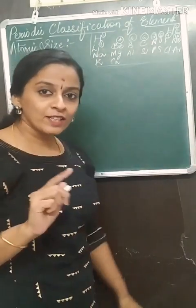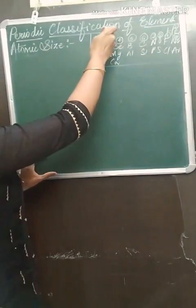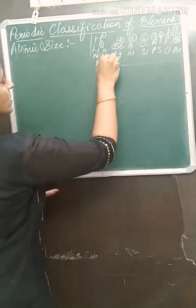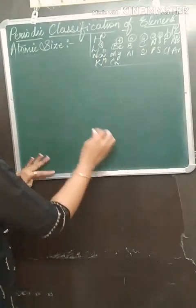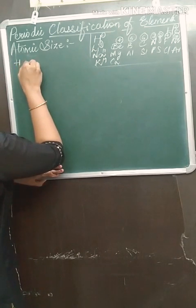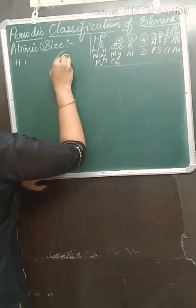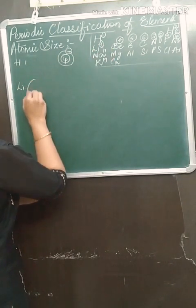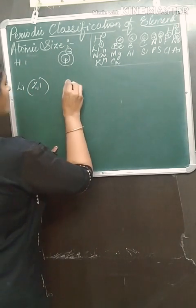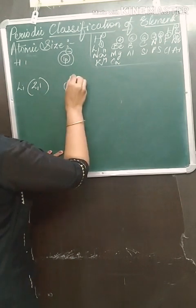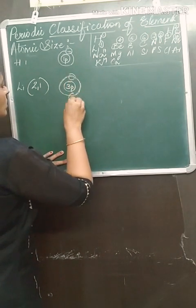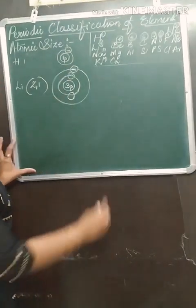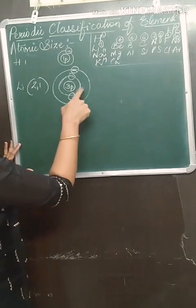Now let us talk about what happens down the group. Let me consider the first group elements: hydrogen, lithium, sodium, and potassium. Sodium's atomic number is 11 and potassium is 19. For hydrogen, atomic number 1, we have 1 proton and the first shell with 1 electron — only 1 shell. For lithium, atomic number 3, electronic configuration 2, 1 — 3 protons in the nucleus, first shell 2 electrons, second shell 1 electron. So lithium has 2 shells: K and L.